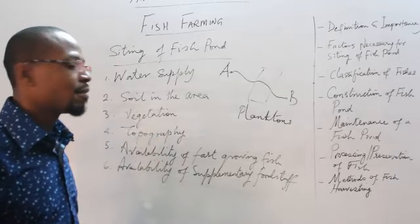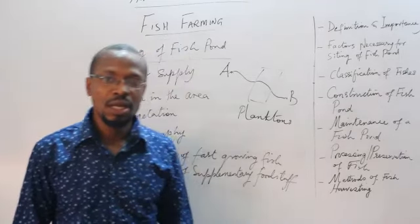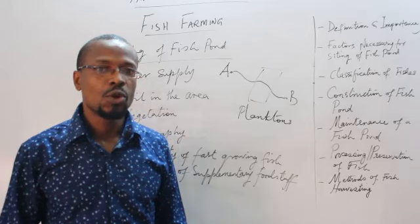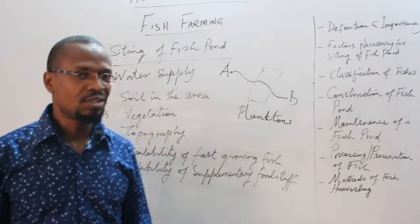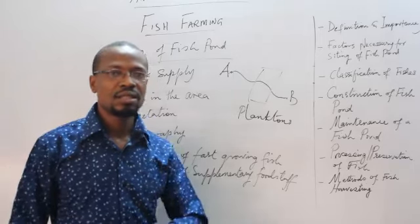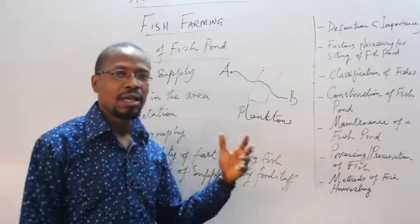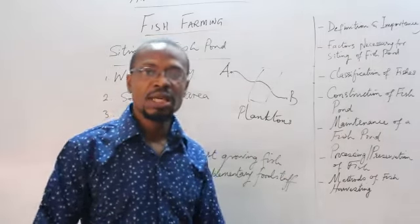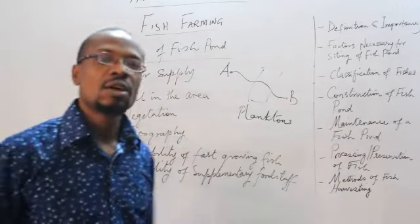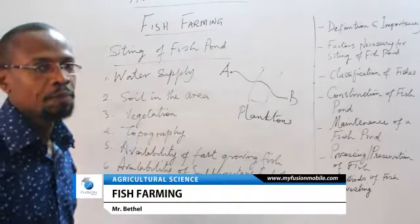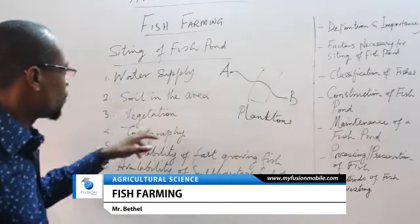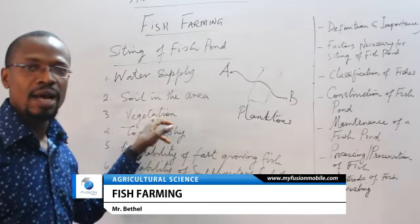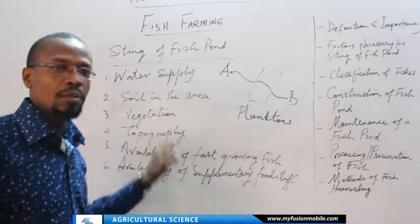You can actually increase the growth of planktons by spreading fertilizers across the water body. If the soil is not fertile, nutrients can be drained off the soil, so the soil should be able to retain water and be fertile enough to support the growth of planktons. The vegetation at your chosen site should be low enough so as not to stress you considerably in felling trees and removing stumps.